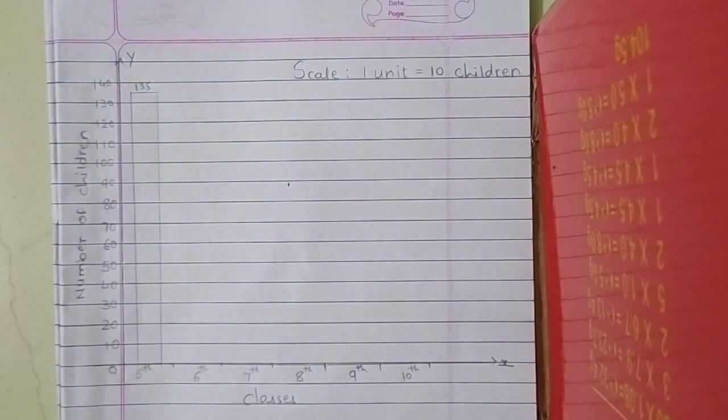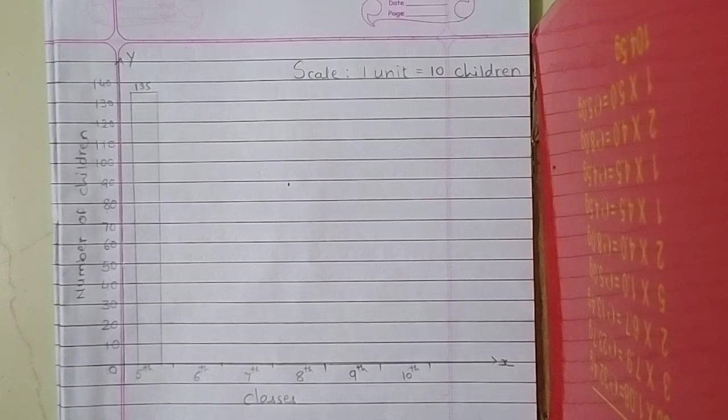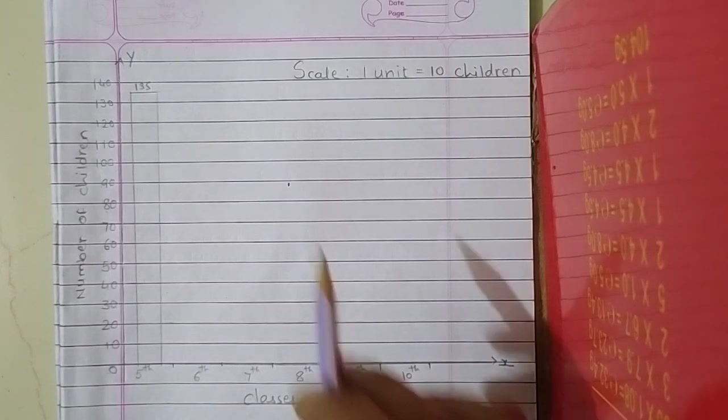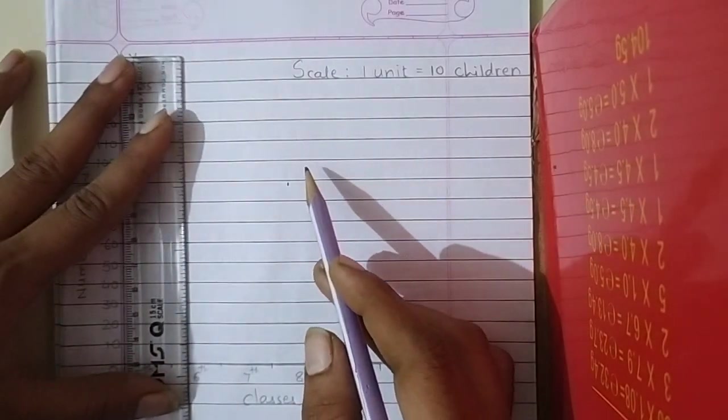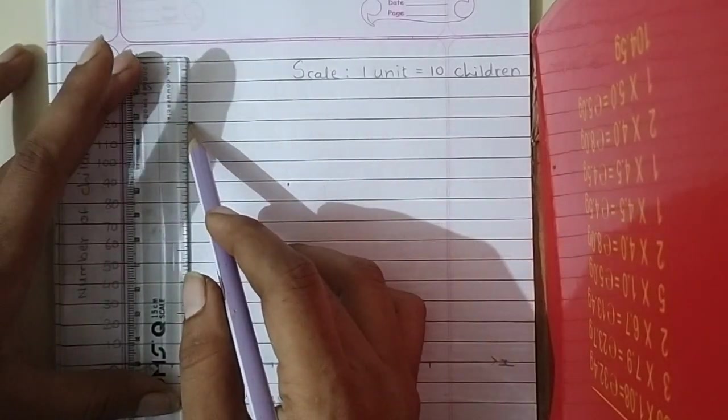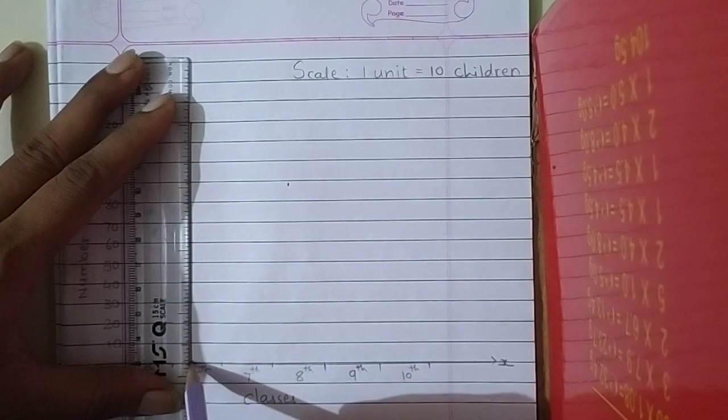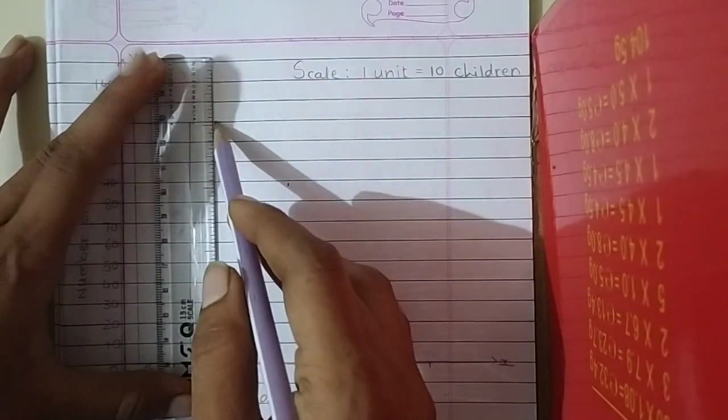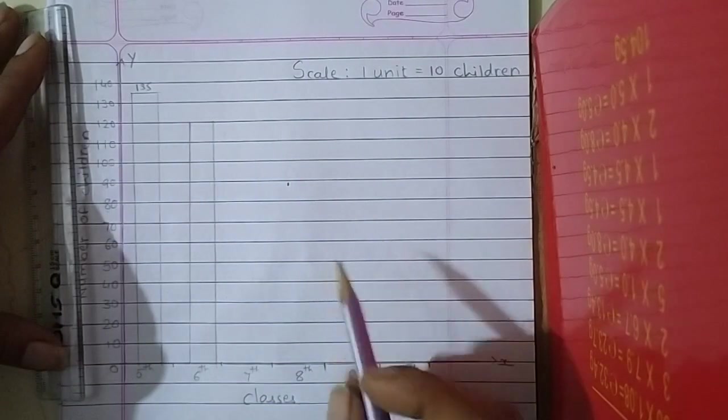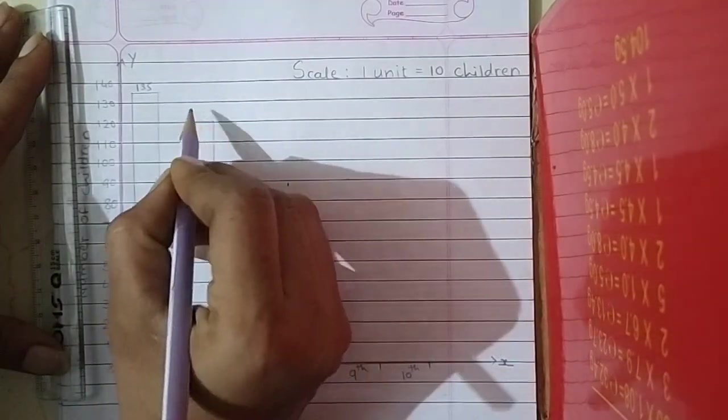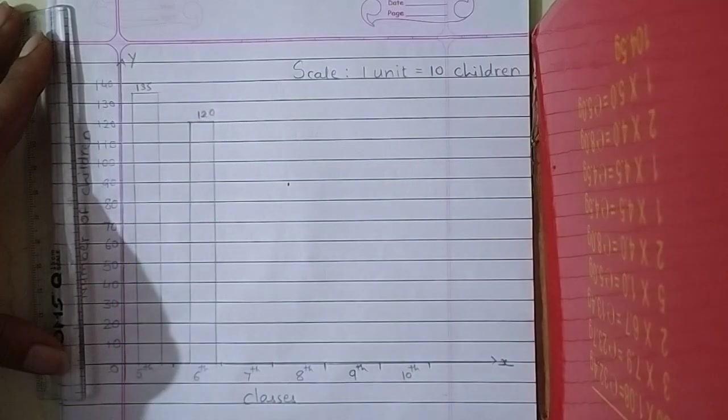Now next, in the 6th class, strength is 120. So where is 120? It is clear. So draw in this manner, 120.